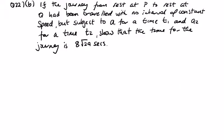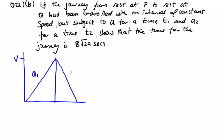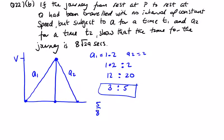Now there's another part to this question. Part B, if the journey from rest at P to rest at Q had been traveled with no interval of constant speed, so there are two triangles, so it's up and then down to a max velocity, but subject to A1 for a time T1 and A2 for a time T2. So we have a ratio here. A1 was 1.2 and A2 was equal to 2. So it's going to take longer to go up than to come down. So the ratio needs to reverse them around. So 1.2 to 2, that's going to be 12 to 20, which is 3 to 5.